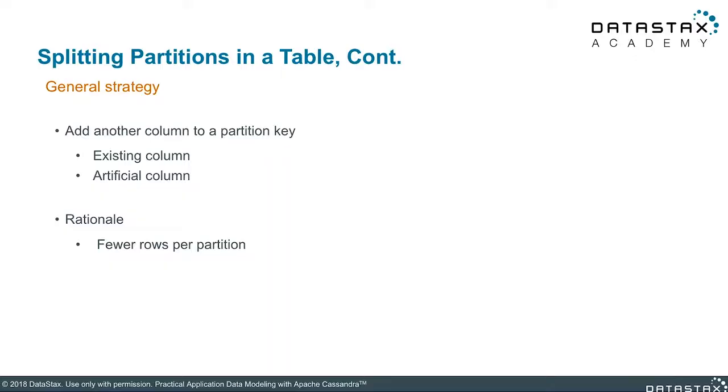What do we want to do if we don't want operations that touch this partition to be impacted? We can see if it's possible to split the partition by redefining our partition key. The general strategy is to find an existing column that you can use to logically split the partition into multiple pieces — sometimes an existing clustering column or a regular column. If there are no viable choices, you may need to create an artificial column specifically for splitting a partition.